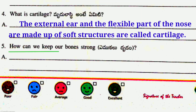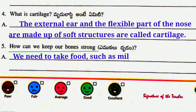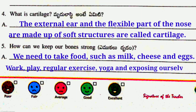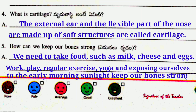Fifth question: How can we keep our bones strong? Answer: We need to take food such as milk, cheese and eggs. Work, play, regular exercise, yoga, and exposing ourselves to the early morning sunlight keep our bones strong and healthy.